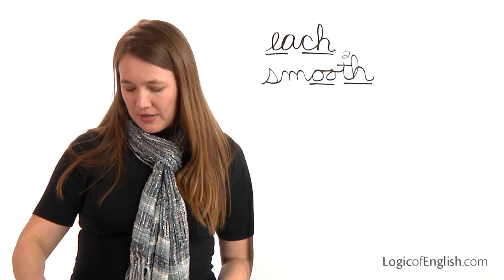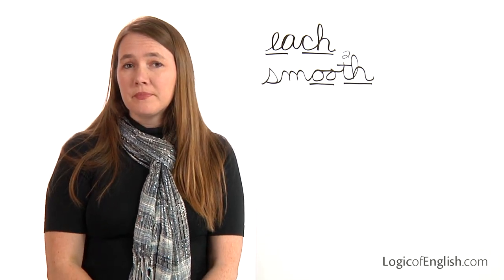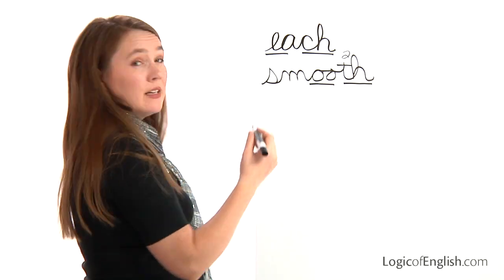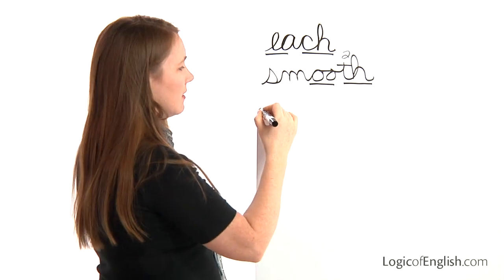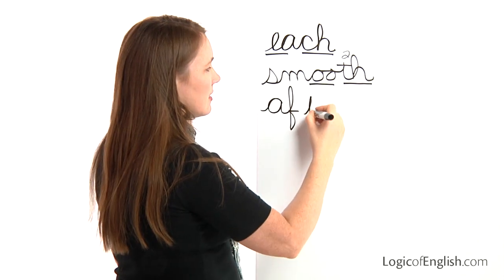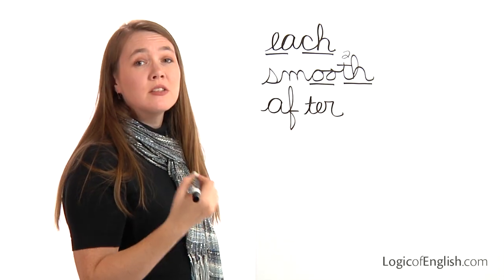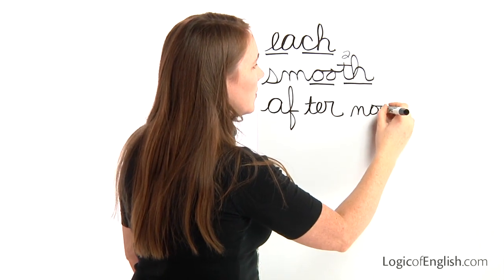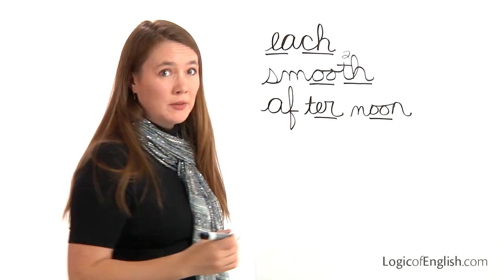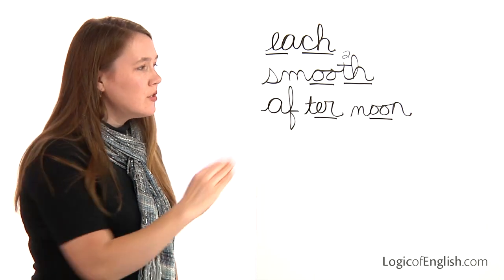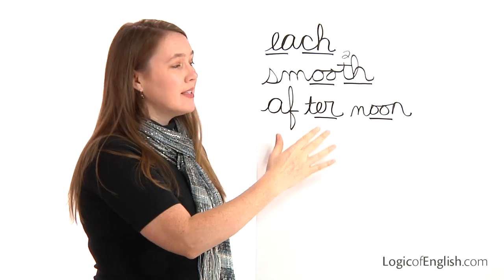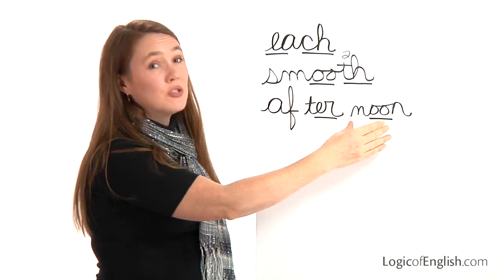Now help me write it: first syllable 'af,' second syllable 'ter,' third syllable 'noon' — N, oo, N. We'll underline the ur and the oo. By the way, what two words form 'afternoon'? Noon and after — this literally means any time after 12 o'clock noon.